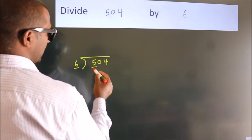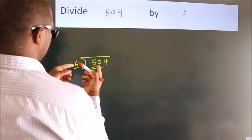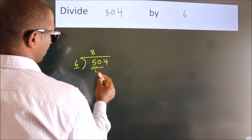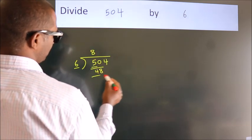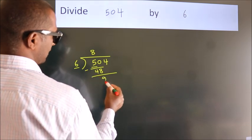So, we should take two numbers, 50. A number close to 50 in 6 table is 6 times 8, 48. Now, we should subtract. We get 2.